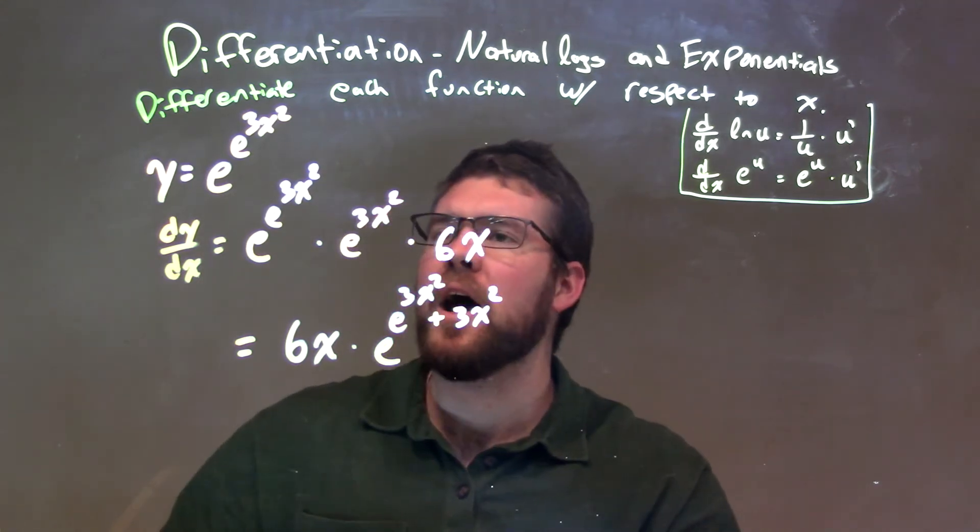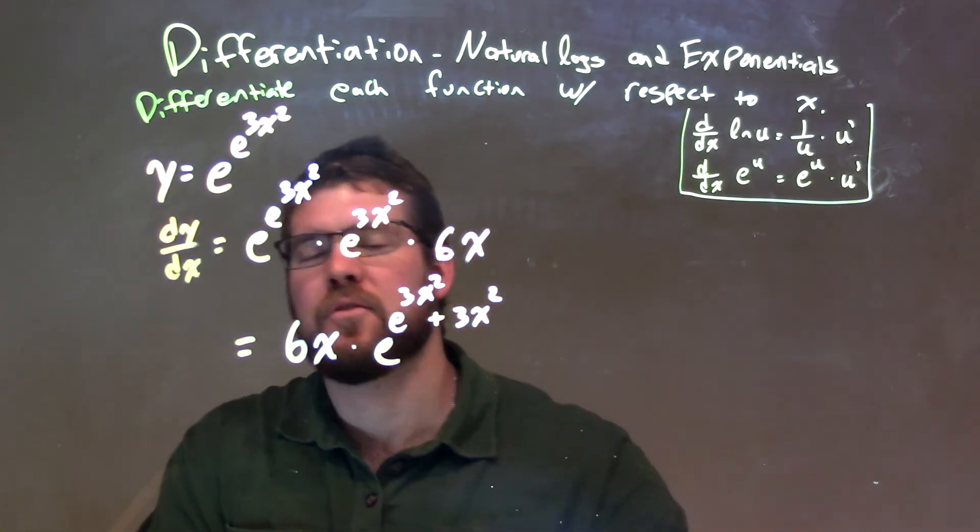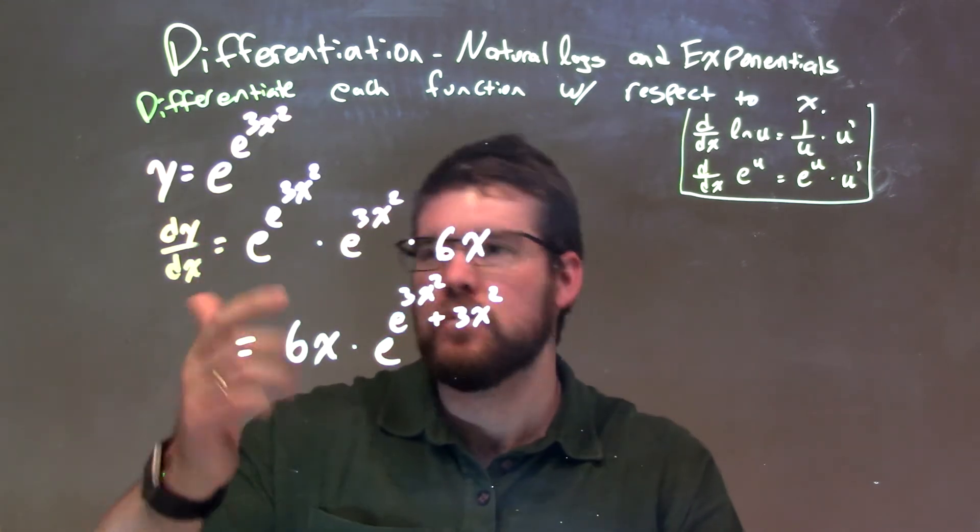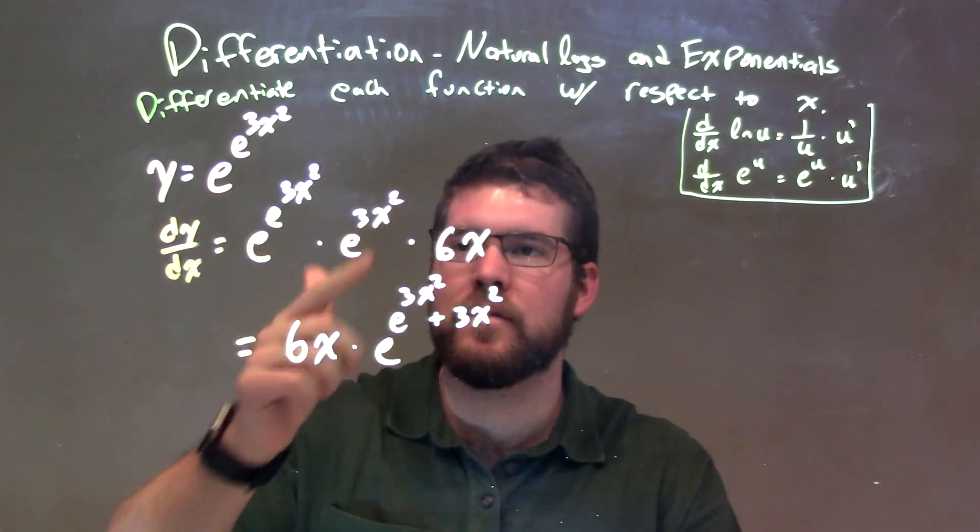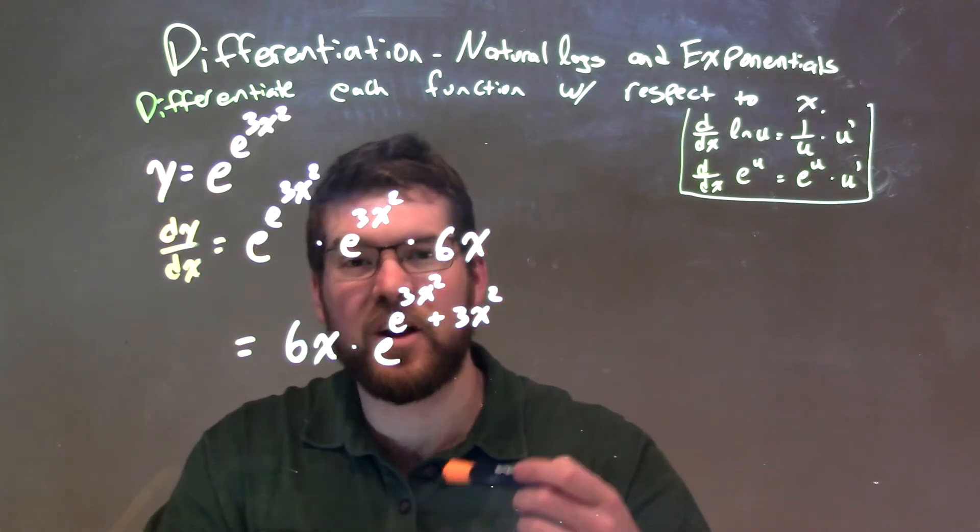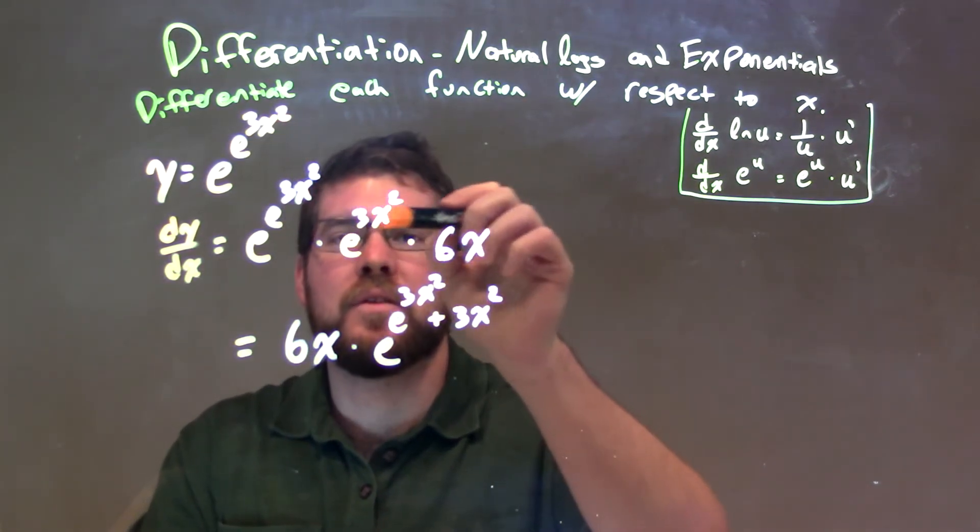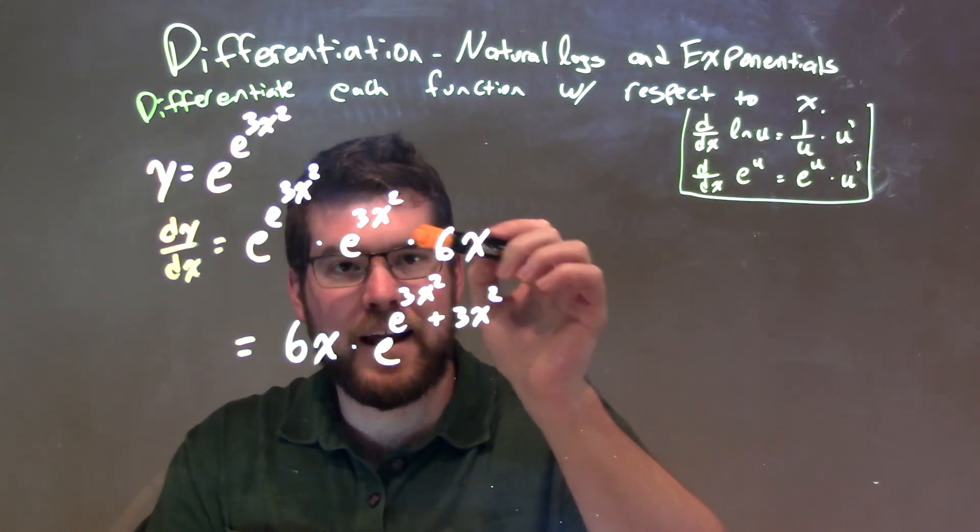So let's recap. We were given y equals e to the e to the 3x squared power. We need to take the derivative. So e to the u, we keep the first one the same times the derivative of the exponent. Well, derivative of the exponent, we keep our exponent, e to the 3x squared, times the derivative of that exponent.